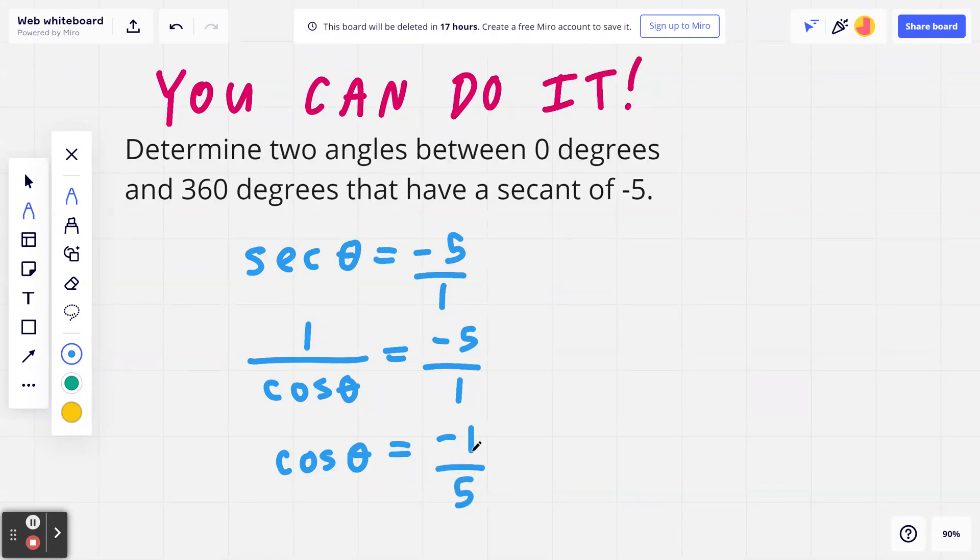The reason I'm saying this is because when you draw a diagram using CAST, recognizing that cosine is going to be negative, you're going to draw two triangles specifically in quadrants 2 and 3. If you look at the right-hand side, it's negative 1 divided by 5, which means adjacent over hypotenuse. You can grab your calculator.